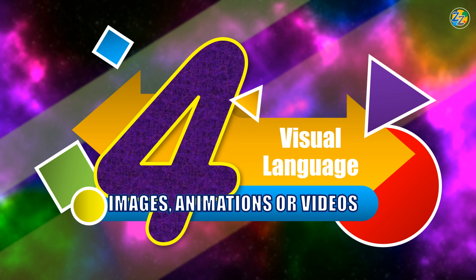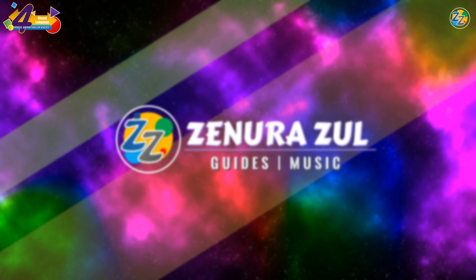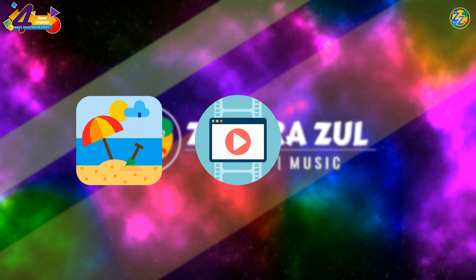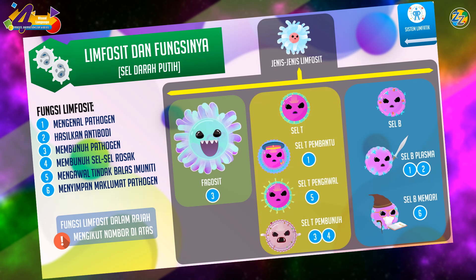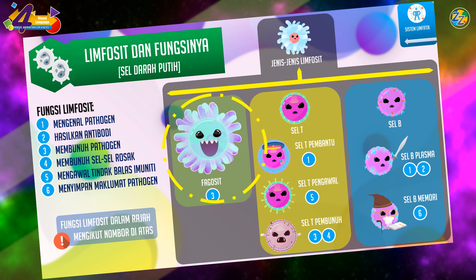Number 4: Visual Language. This is where we use images, videos, or animations to communicate. For example, in this slide I used images to show the types of lymphocytes — which are white blood cells. Here I used a huge, scary-looking white cell with a big mouth, which is the phagocyte, one type of lymphocyte. Phagocytes eat pathogens, which explains the big mouth.